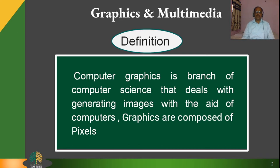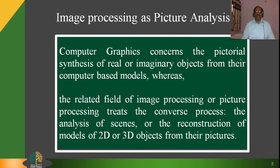To execute or prepare these graphics, we do image processing and picture analysis. Computer graphics concerns the pictorial synthesis of real or imaginary objects from their computer-based models, whereas the related field of image processing creates the converse process — the analysis of scenes or the reconstruction of models of two-dimensional or three-dimensional objects from their pictures.